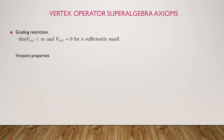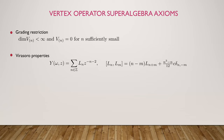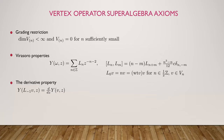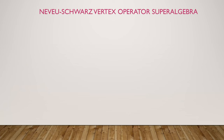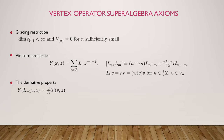We also want graded components to be finite dimensional, zero for n sufficiently small, and we want the conformal vector to give us a representation of the Virasoro algebra with central charge C, with L_0 giving the degree of each vector. And the derivative property says L_{-1} behaves like the formal derivative.